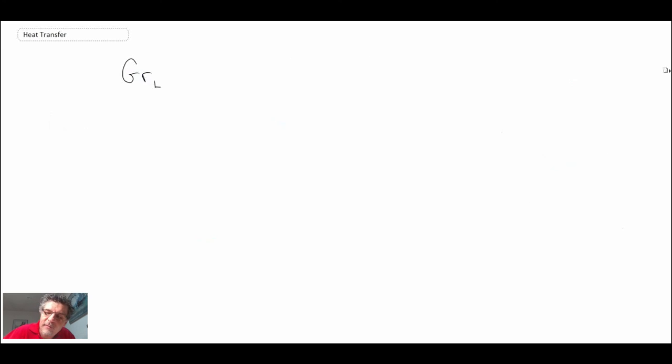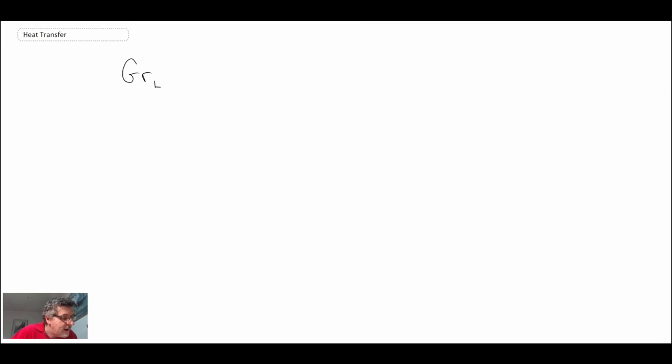The temperature difference is going to be the hot surface minus the cooler surface. The length scale is L, and then we divide that by our kinematic viscosity nu, which is squared. That's the Grashof number.